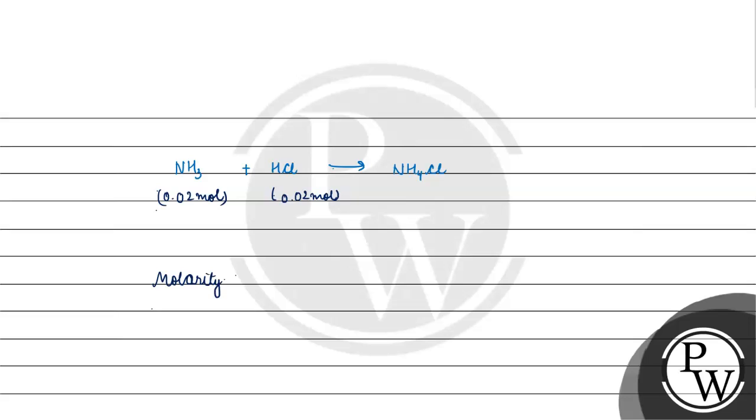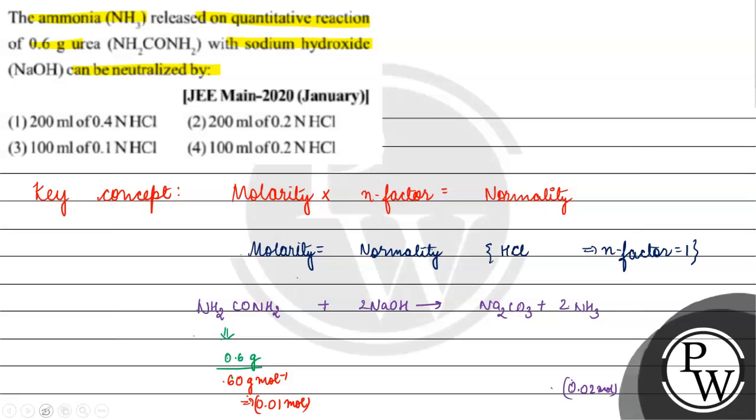Molarity equals number of moles of HCl divided by volume of solution. So number of moles of HCl will be molarity times volume of solution.